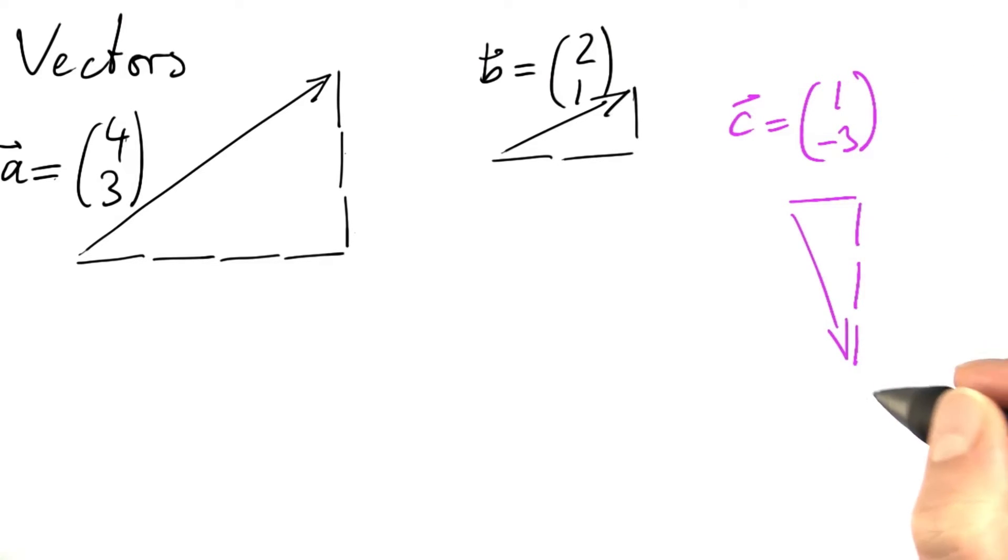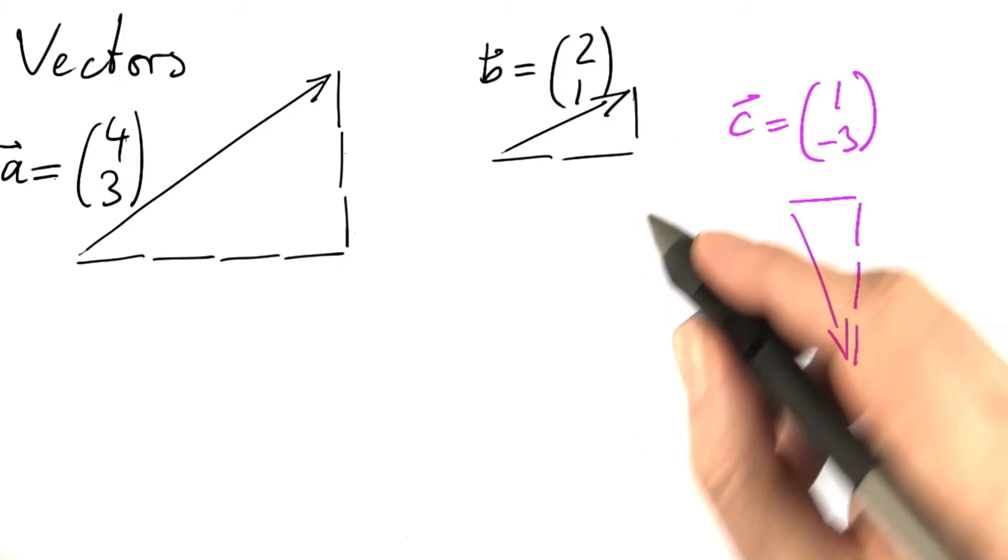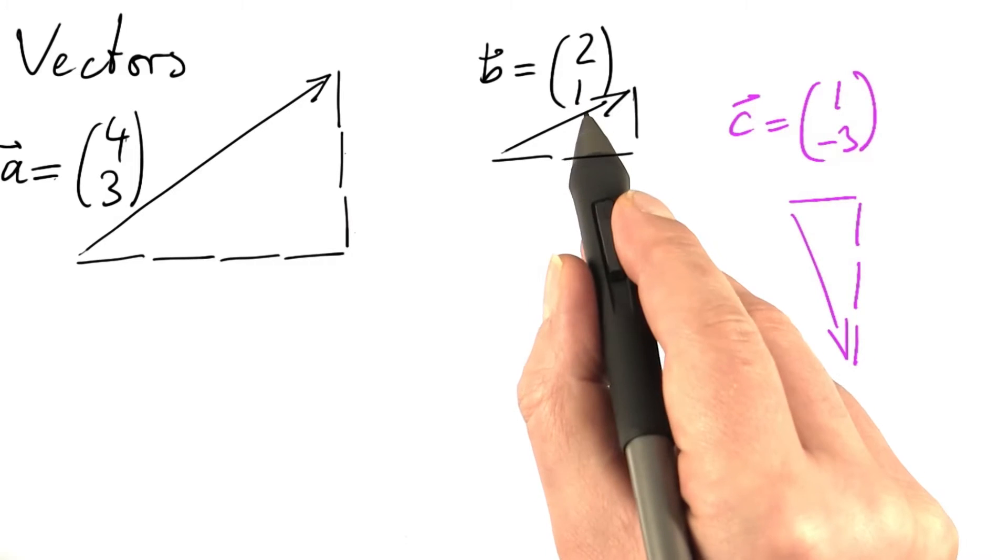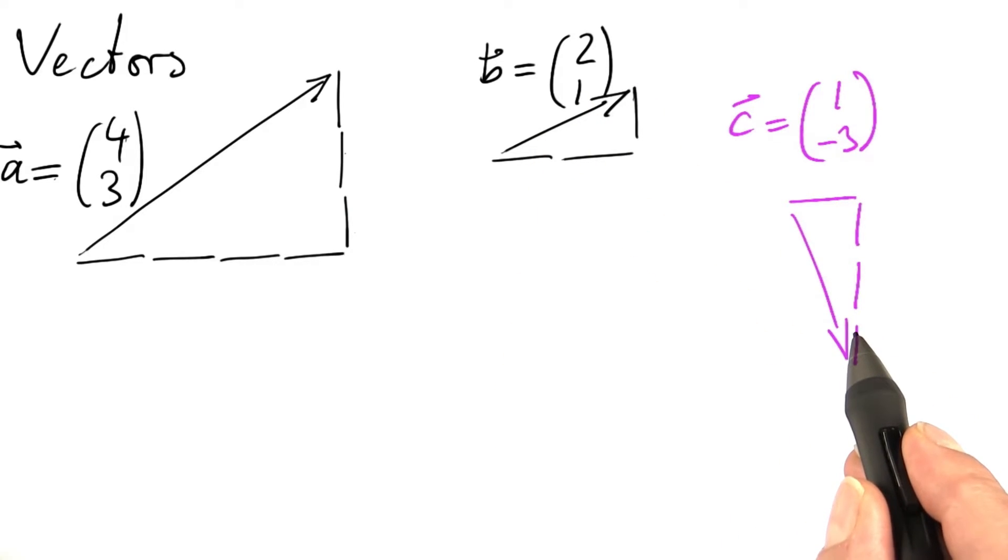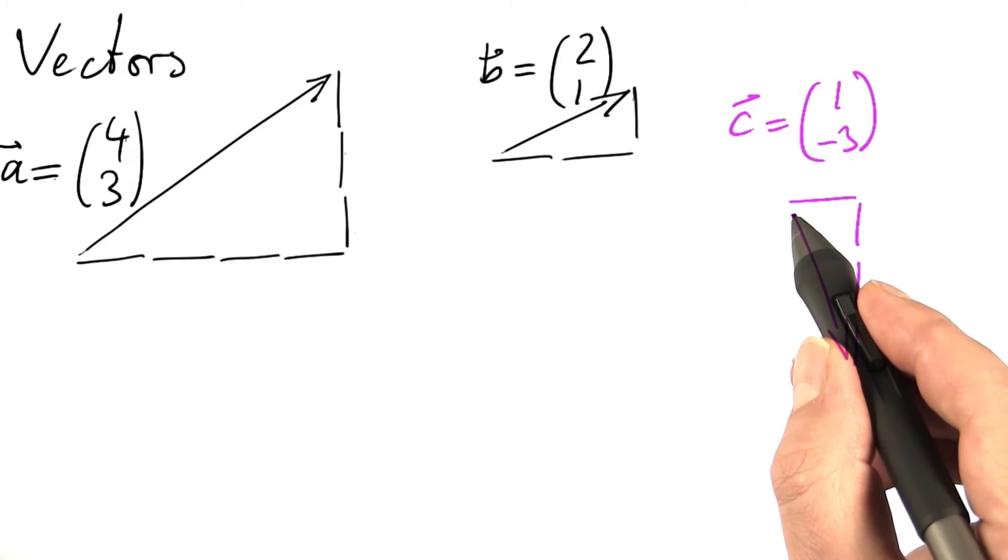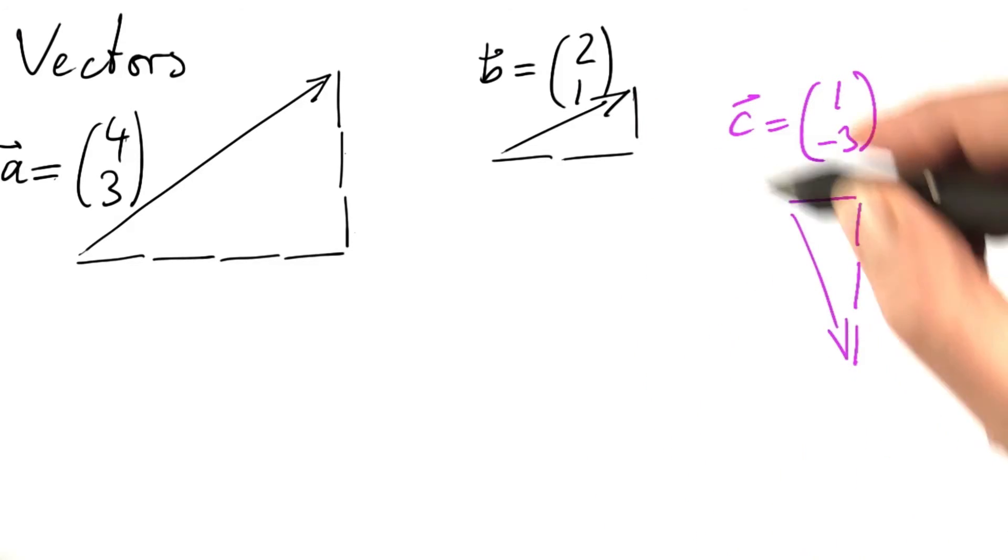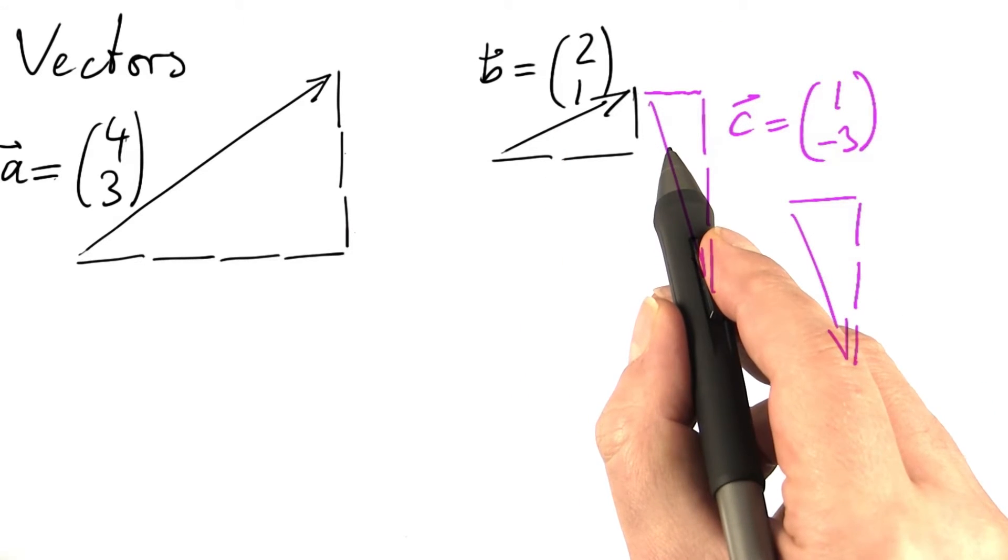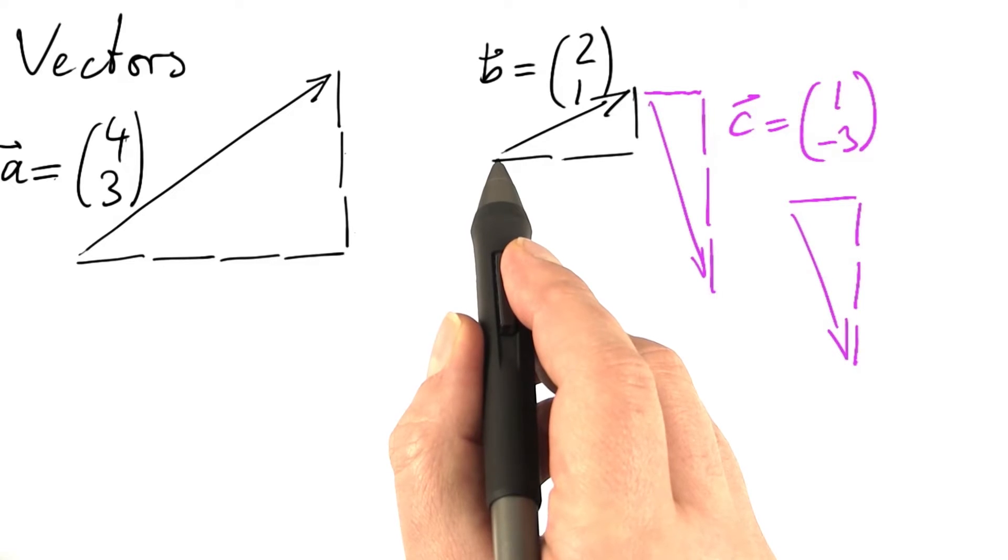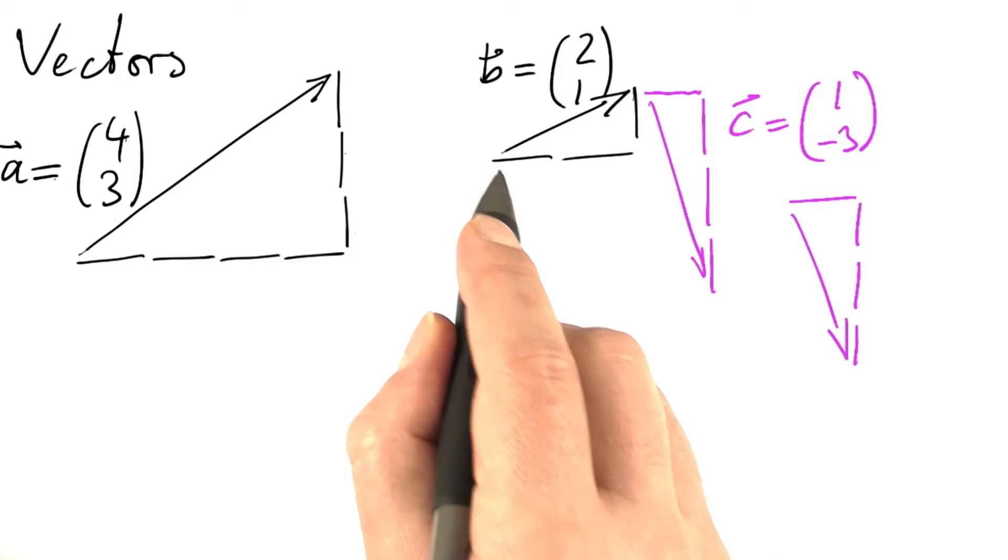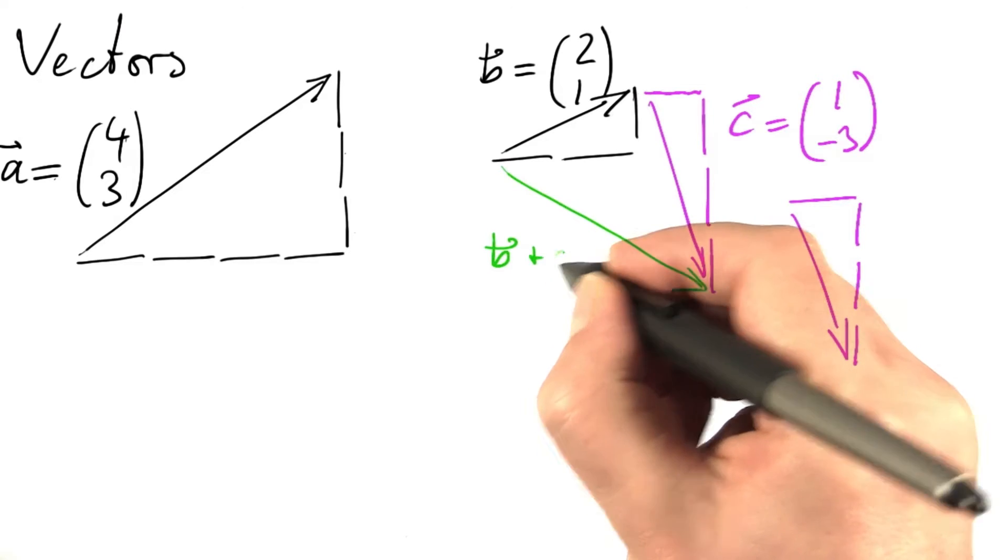And now we can do some basic arithmetic. We can add vectors, for instance. Let's add b and c. If we want to add b and c, we put them together. The tail of c goes to the tip of b, or the other way around. And the resulting vector, which is b plus c, goes from the tail of b to the tip of c. So this is the sum of the vectors, b plus c.